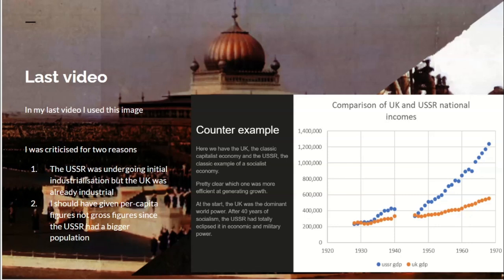People raised a couple of reasonable objections to that. One was that the USSR was undergoing initial industrialisation, whereas the UK was already industrial, and it's easier to have rapid growth when you're undergoing initial industrialisation. The second objection was that I should have given per capita data for the USSR and the UK, not gross national income, because that doesn't account for the USSR having a larger population.